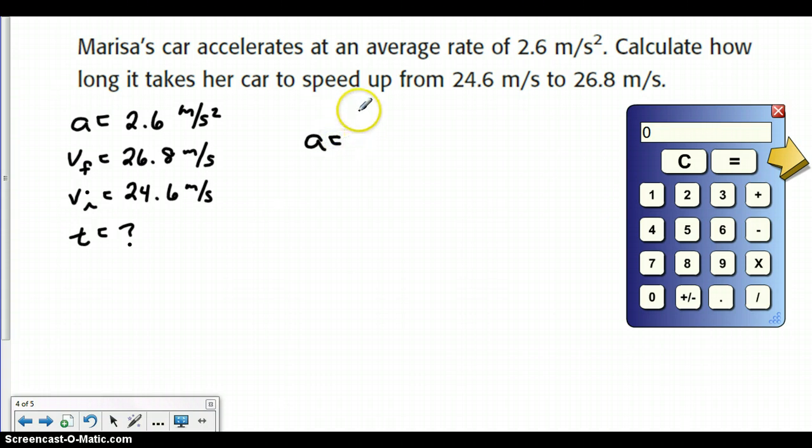Our initial velocity is 24.6 meters per second. So if we go back to our equation, acceleration equals VF minus VI over T. By the way, this VF minus VI can actually be done as delta V. Delta, which is this triangle symbol, just means change in. So this is the change in velocity.